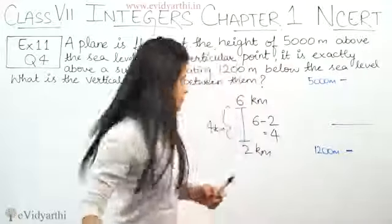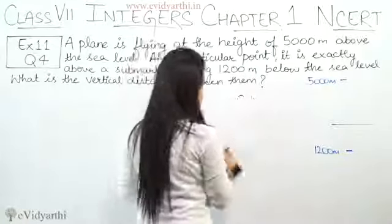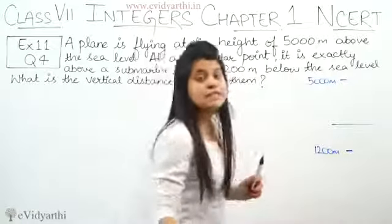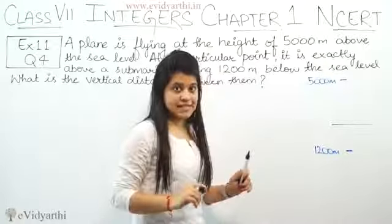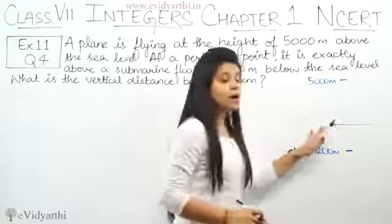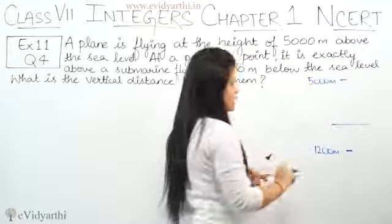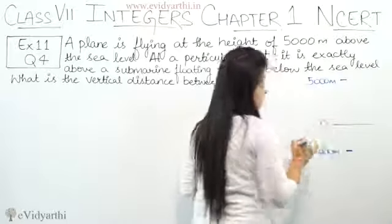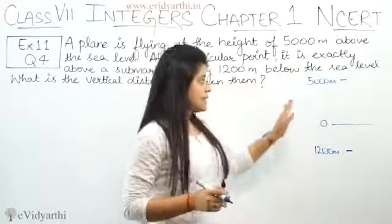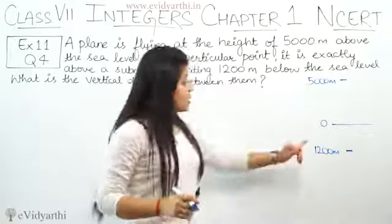But there is a twist. The distance from the sea level is given. If this is the sea level, let's suppose 0, then the plane distance is 5000. This is the submarine.